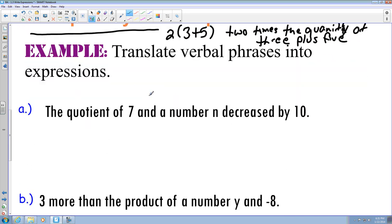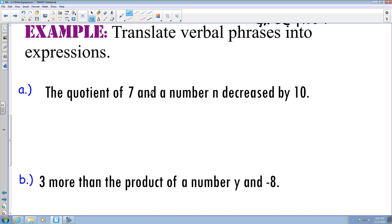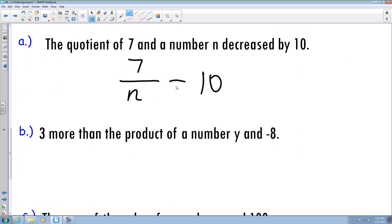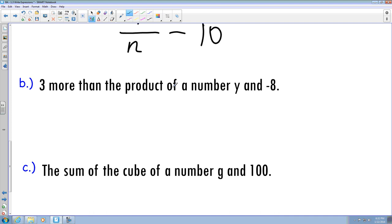Okay, so we're going to take a look at some examples and we're going to translate verbal phrases into expressions. First thing I have is the quotient of 7 and the number n decreased by 10. So the quotient of 7, remember that quotient is division, so it's 7 divided by a number n and it's going to be decreased, which is subtraction, by 10. Alright, looking at b, I got 3 more than the product of y and negative 8. So I have 3 more than is addition, and then the product of is going to be multiplication, and the multiplication comes from negative 8 times y. You could also have it as 3 plus negative 8 times y like this. Both answers are perfectly acceptable.